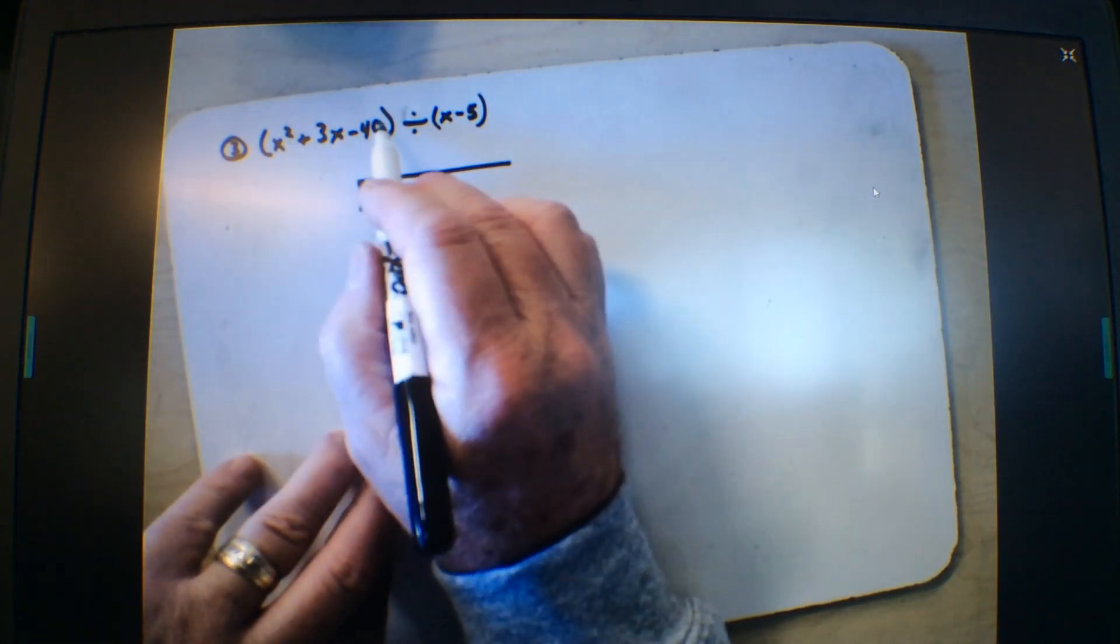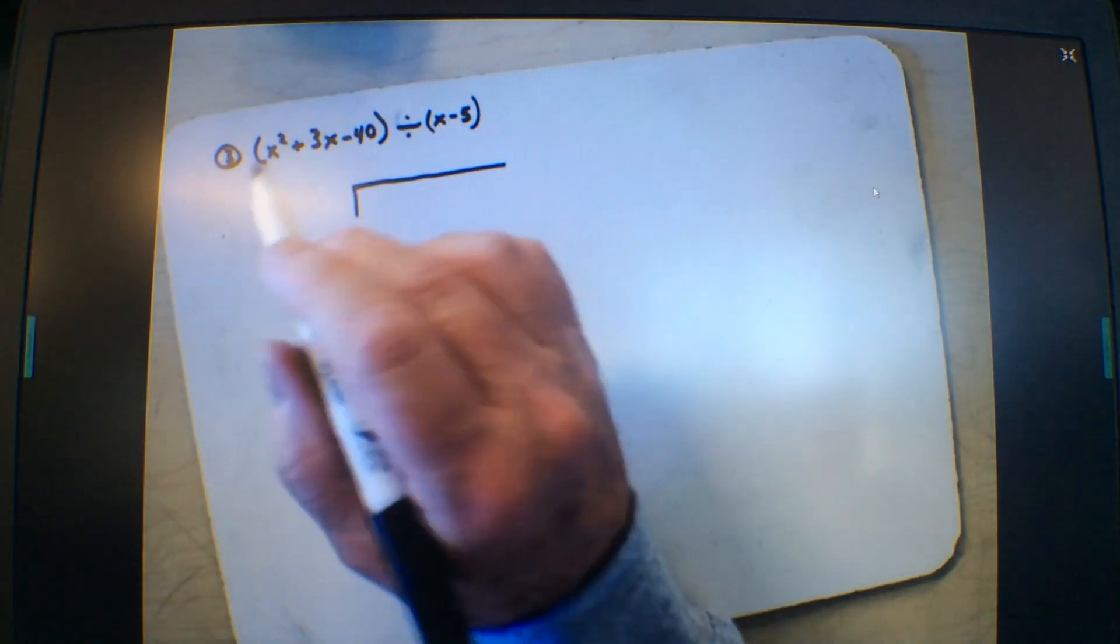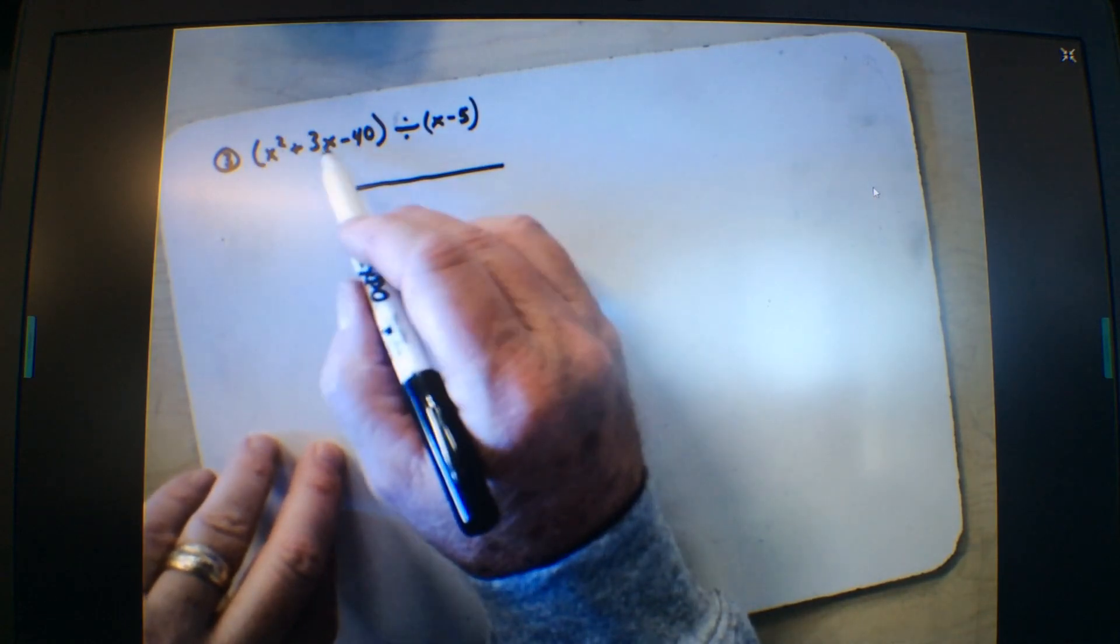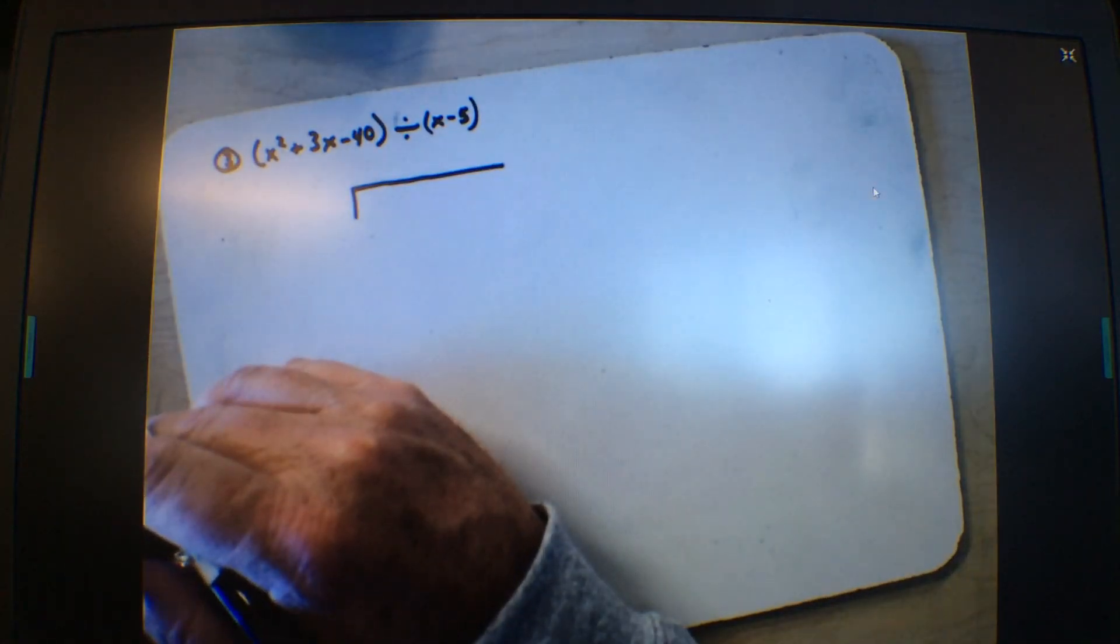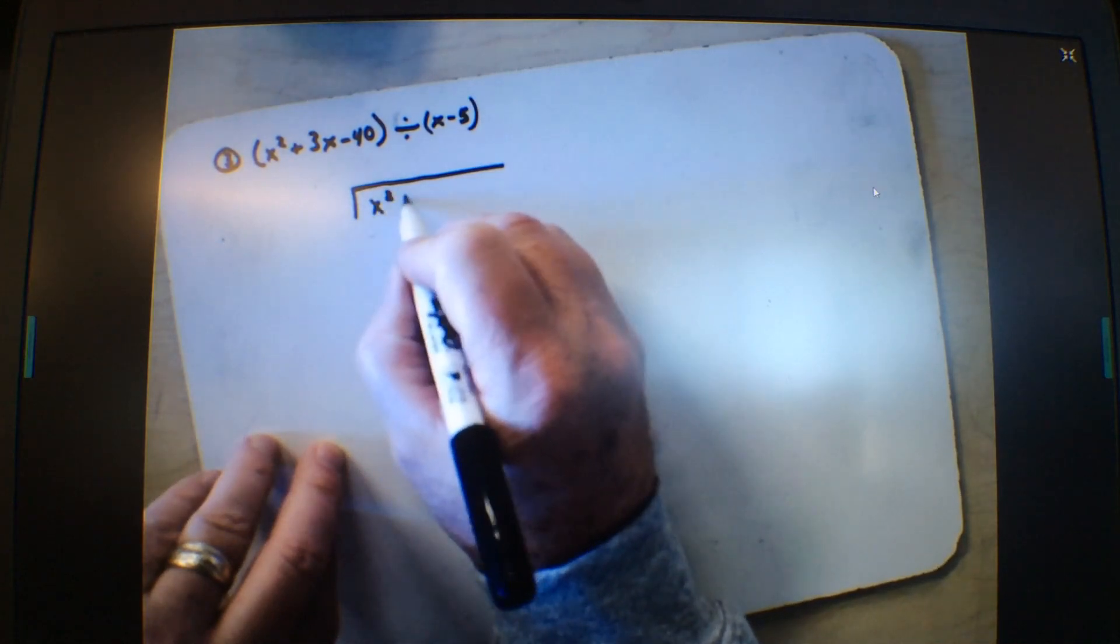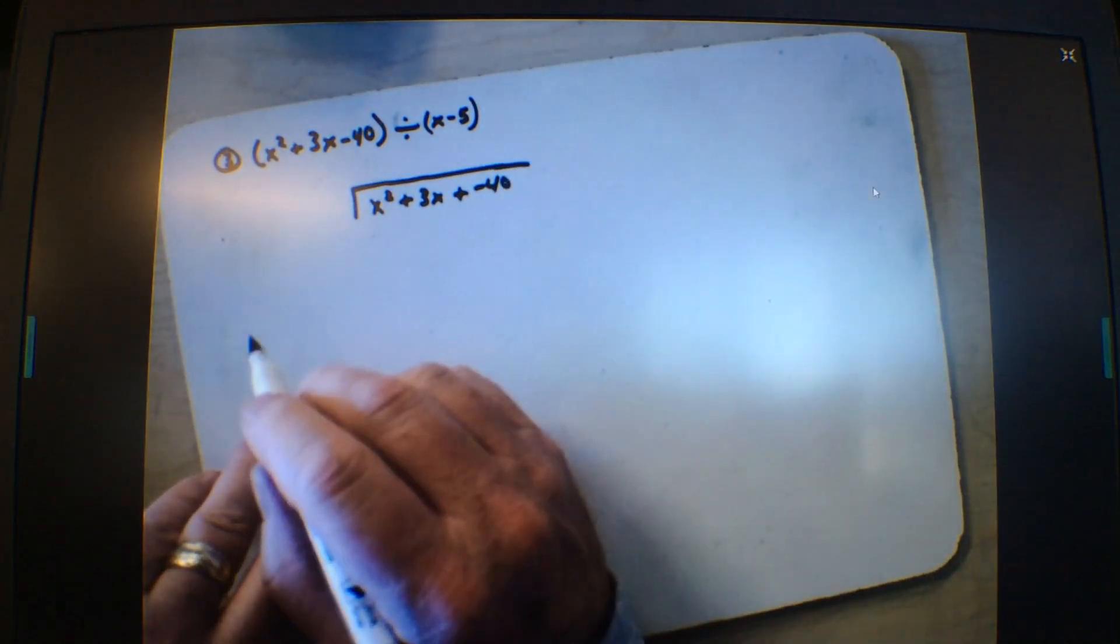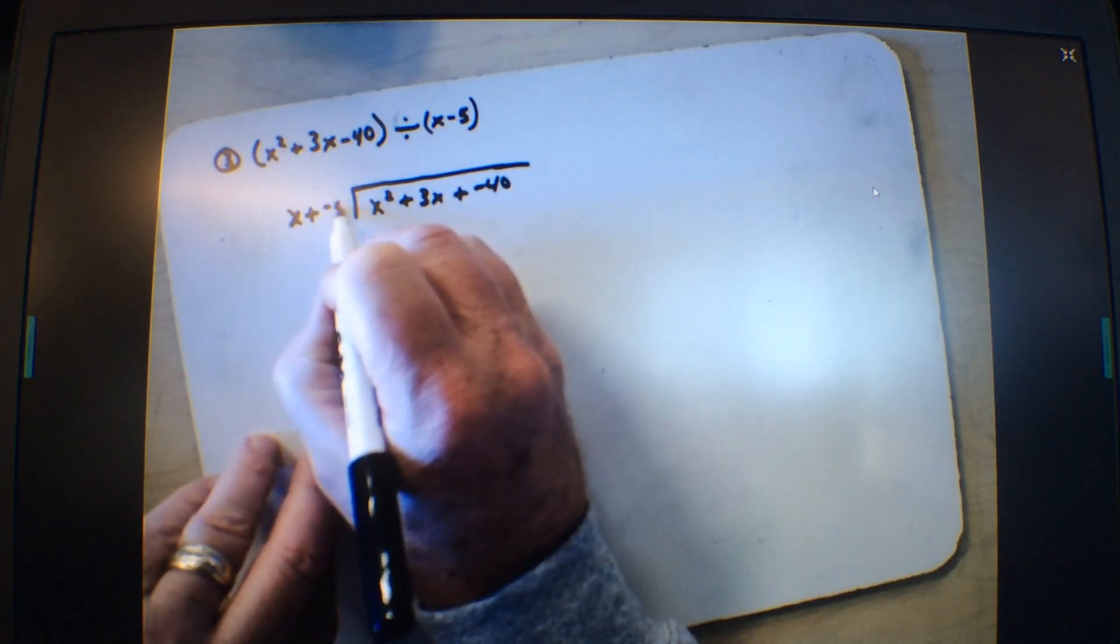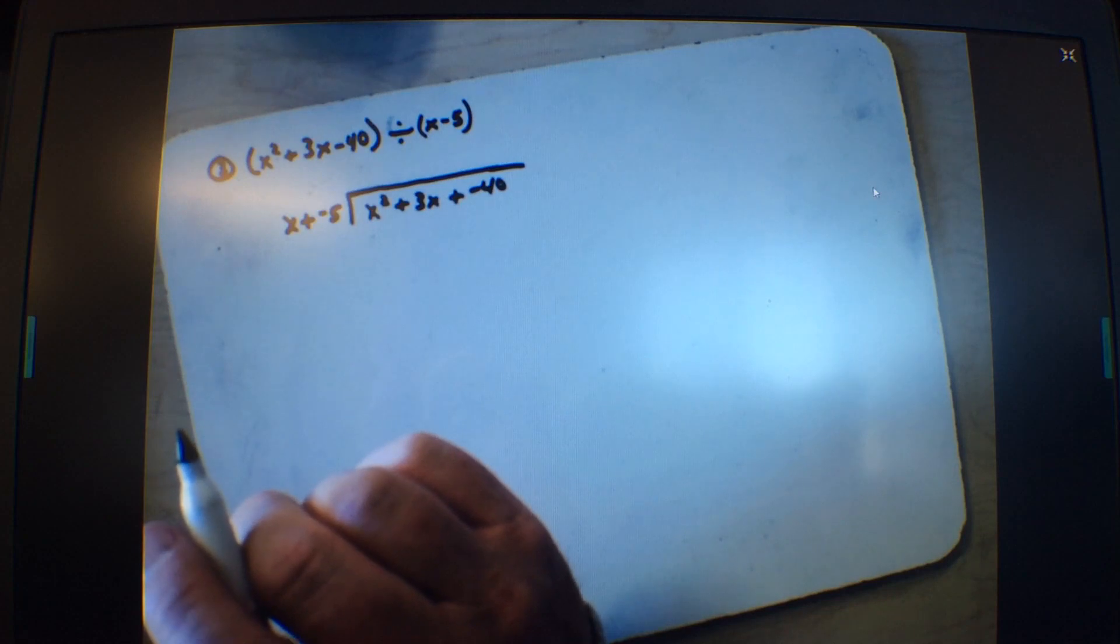So, x squared, x to the first, and x to the zero, right? If they skip one, you have to put it in. So, let's say that we went from x squared to minus 40, and they skipped an x term. You would have to put a zero x term in. Because you've got to have all the terms all the way down. And I'll try to find one that does that. Notice I change all subtraction to addition, and then the x plus the negative 5 out here. You see that long division is not friendly, is it?